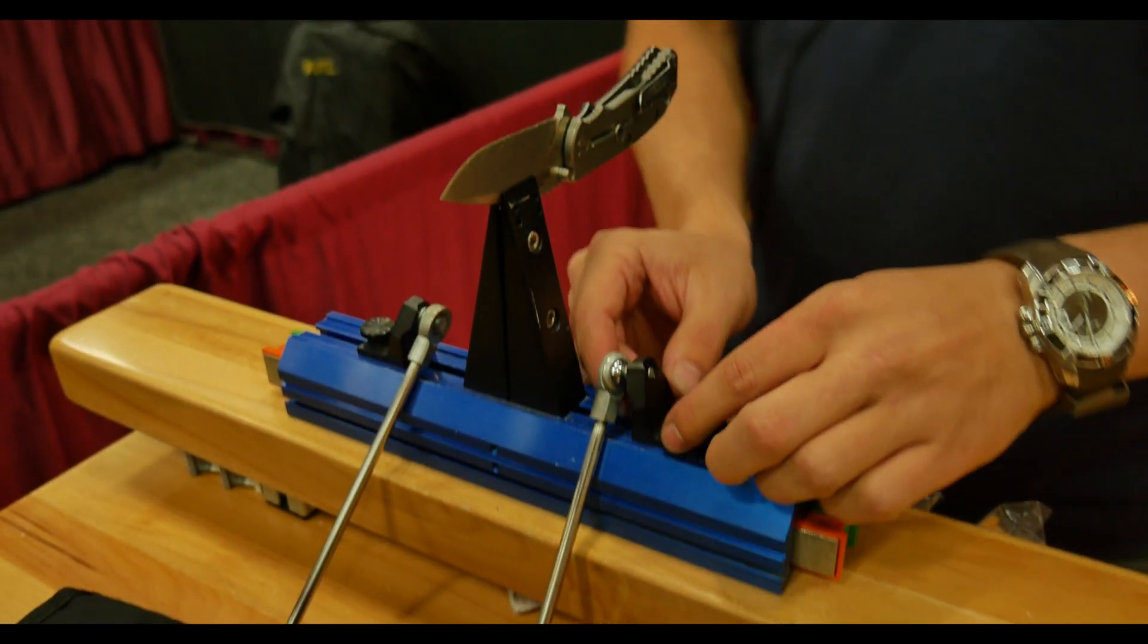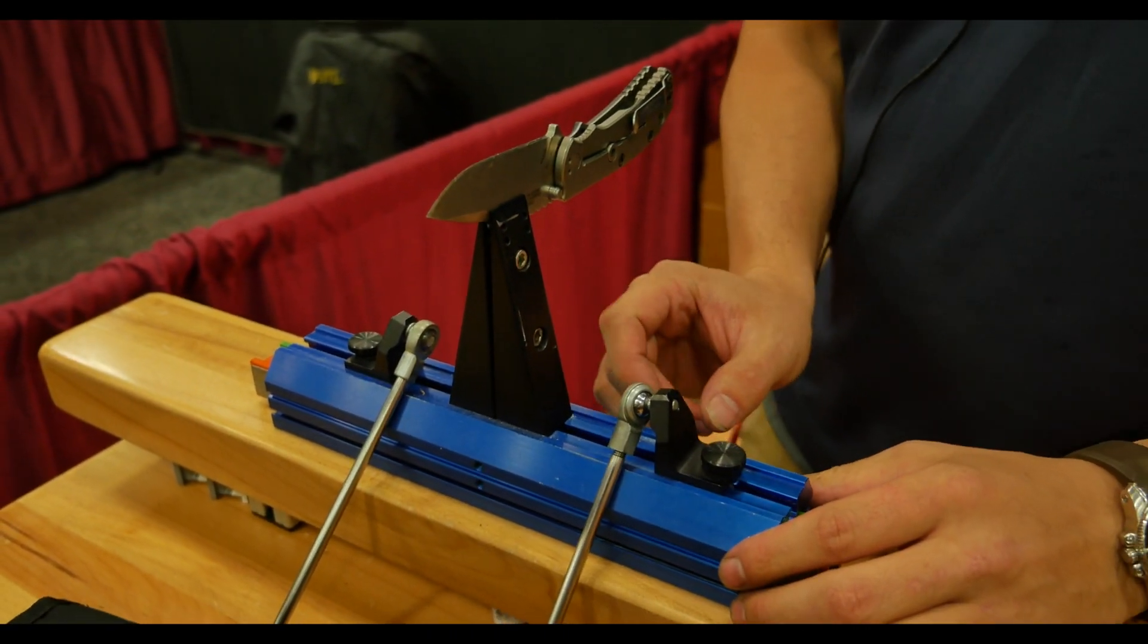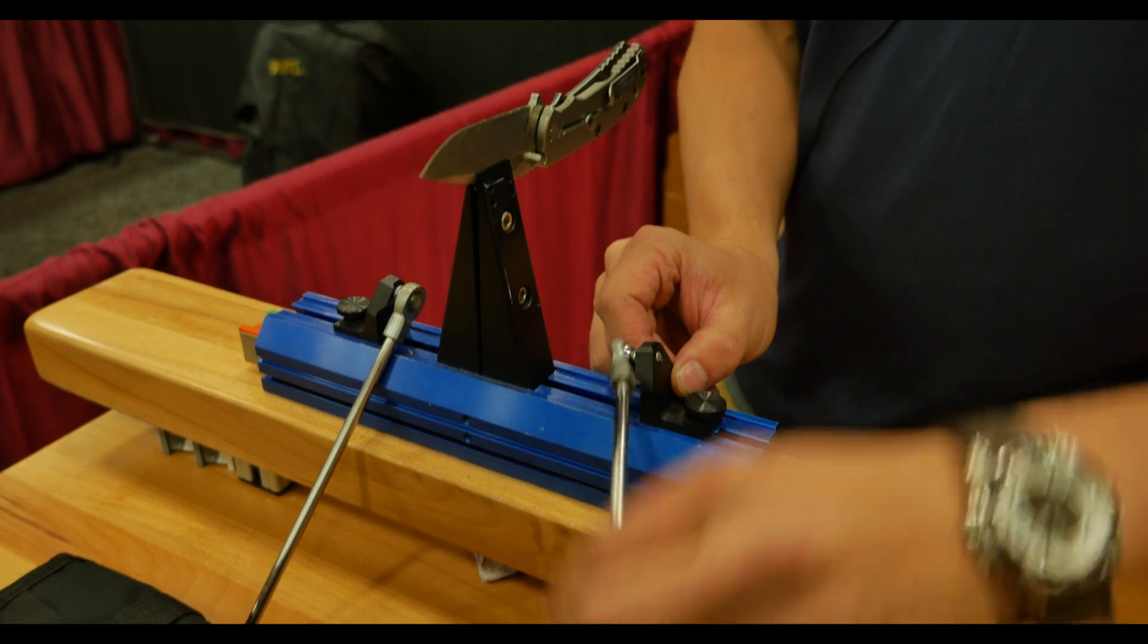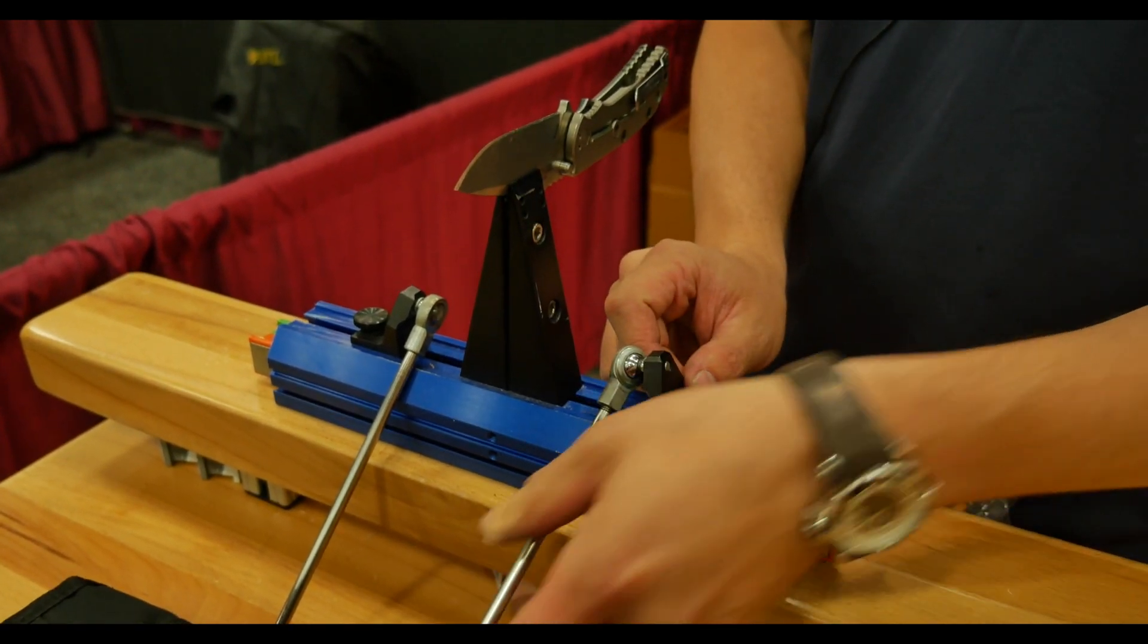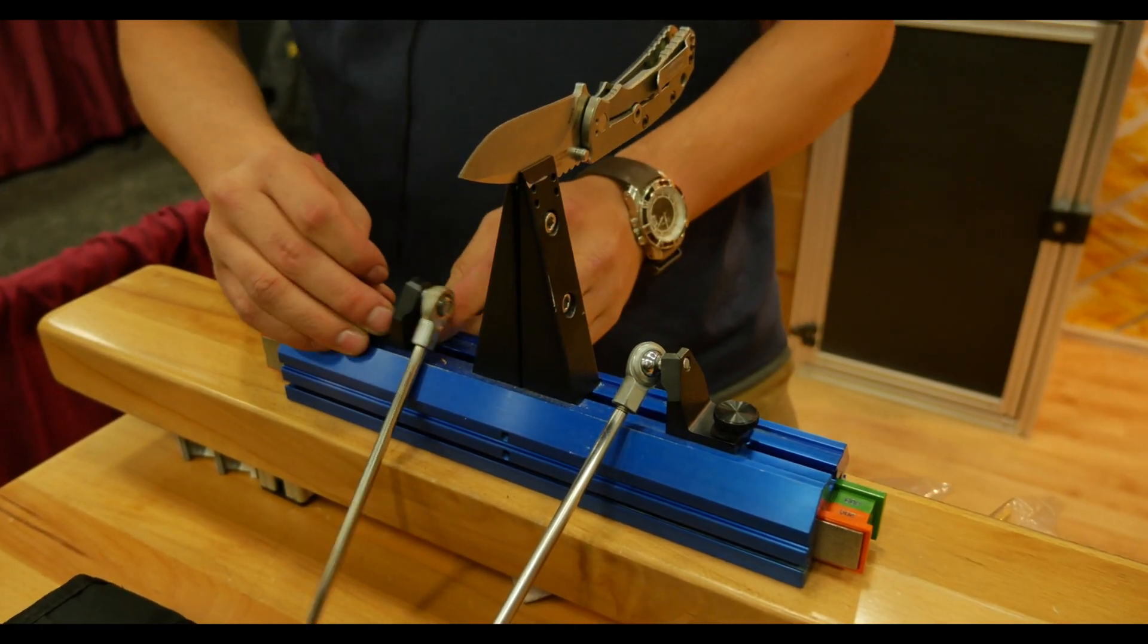So the sharpener itself, the angle can be adjusted on both sides. It's got an angle range of 15 to 30 degrees and you adjust it by just sliding this bracket back and forth. So it's going to adjust on both sides.